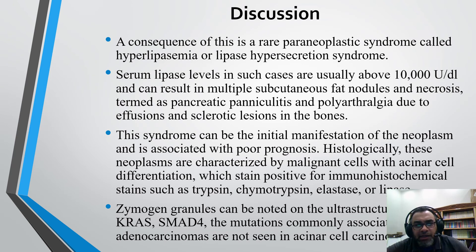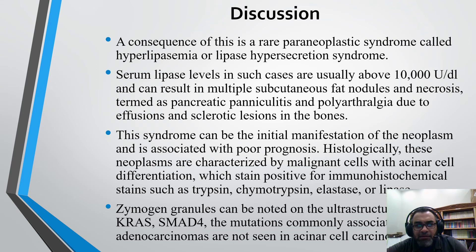These tumors are characterized by production of zymogen granules containing pancreatic exocrine enzymes. A consequence is a rare paraneoplastic syndrome called hyperlipasemia or lipase hypersecretion syndrome. Serum lipase levels in such cases are usually above 10,000 units per deciliter and can result in multiple subcutaneous fat nodules and necrosis — termed pancreatic panniculitis — and polyarthritis due to effusions and sclerotic lesions in the bones. This syndrome can be the initial manifestation of the neoplasm and is associated with poor prognosis due to delayed diagnosis. Histologically, these neoplasms are characterized by malignant cells with acinar cell differentiation, staining positive for trypsin, chymotrypsin, elastase, or lipase. Zymogen granules can be noted on ultrastructural examination.